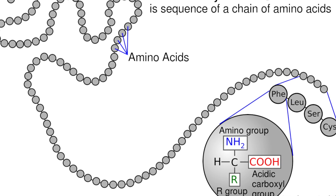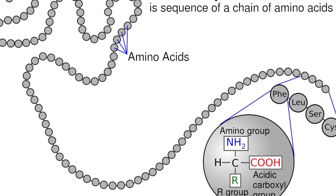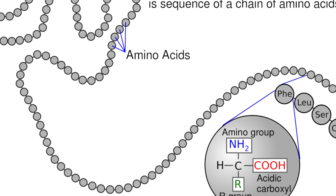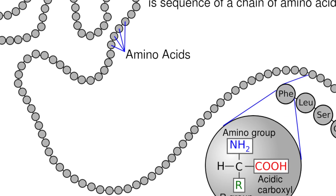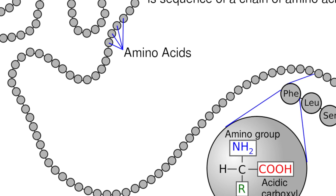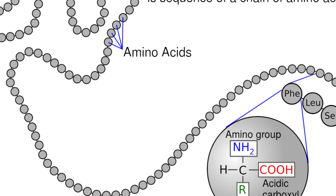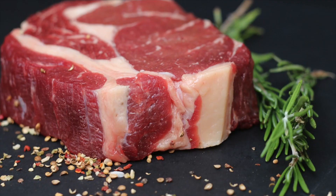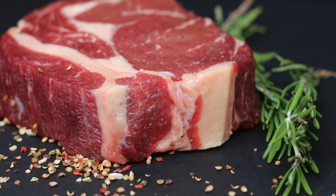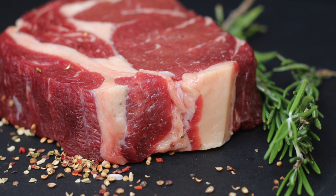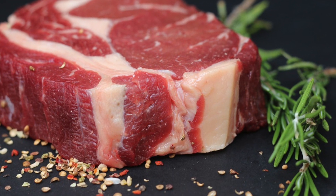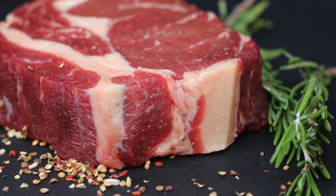Different proteins are made from different arrangements of amino acids, and the long chains of amino acids are folded to make a specific 3D shape. These specific shapes allow other molecules to fit into the protein. However, the bonds that hold these proteins into their 3D shapes are very sensitive to temperature and to pH, and they can be broken easily — and when this happens the protein can be denatured.